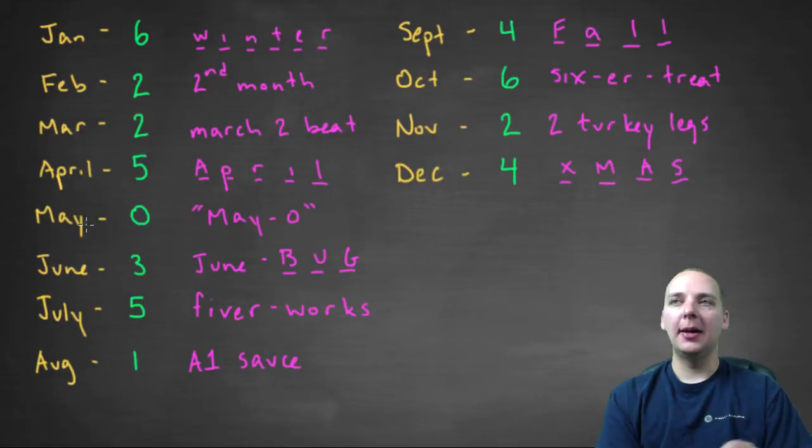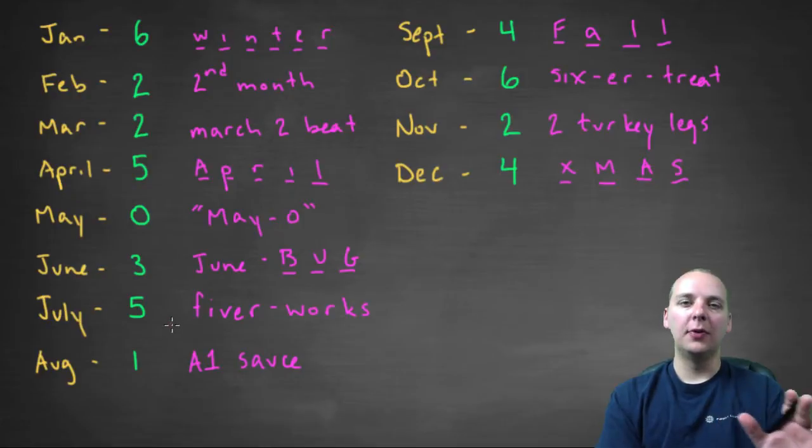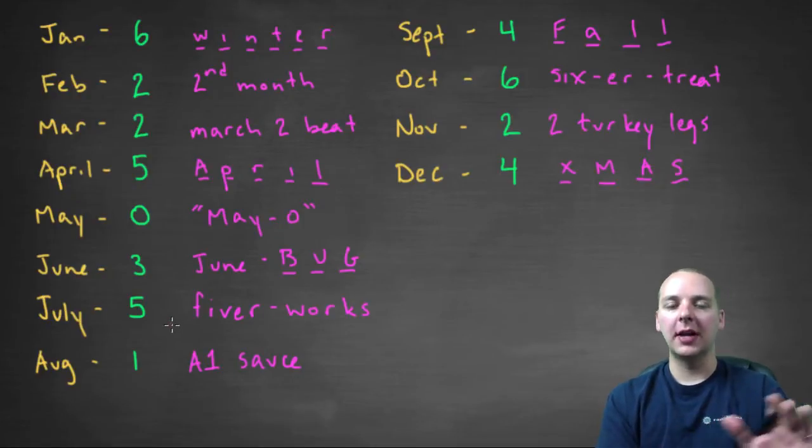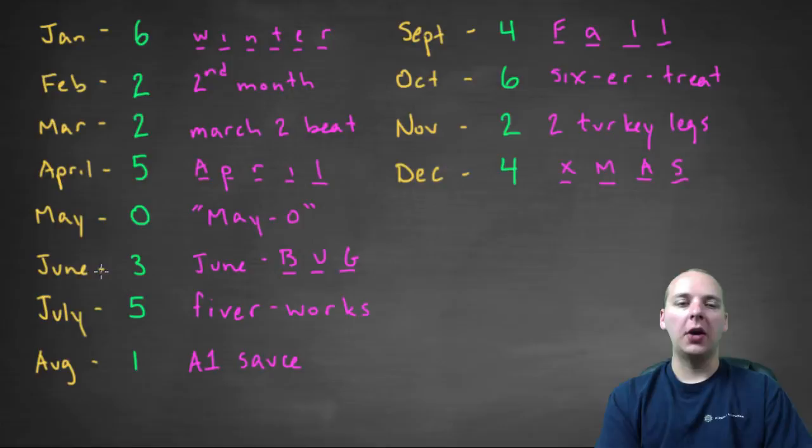When you think May, think like mayo, like mayonnaise, May is 0. When you think June, think of the word or the phrase June bug, bug has 3 letters, so that would be the number 3. July is the number 5 because think of the phrase Fiver works, like fireworks. You have fireworks in the month of July.